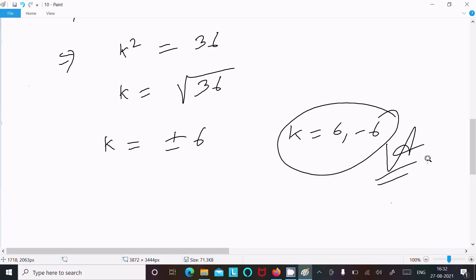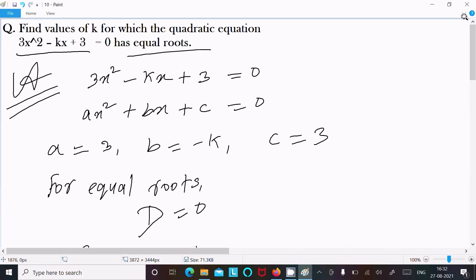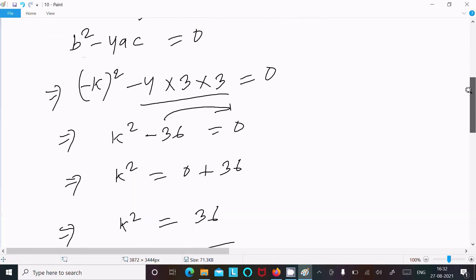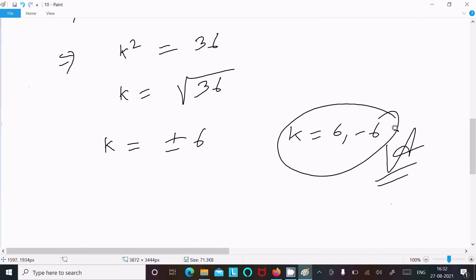So this is the answer. k is 6 or -6. Write the equation, compare with general form of quadratic equation, identify a, b, c. For equal roots, discriminant = 0. Use D formula: b^2 - 4ac. Put the a, b, c values, and after doing the calculation, k = 6 or -6.